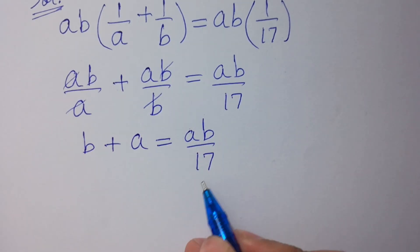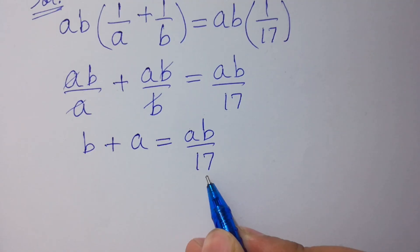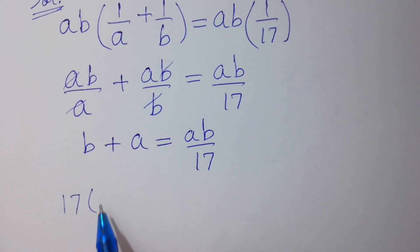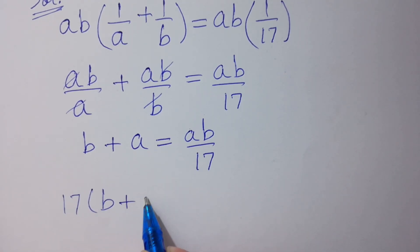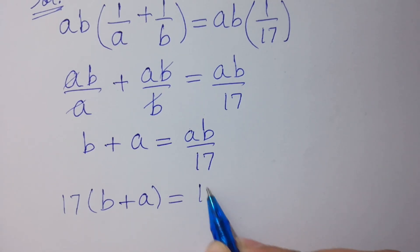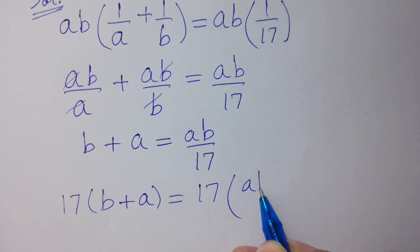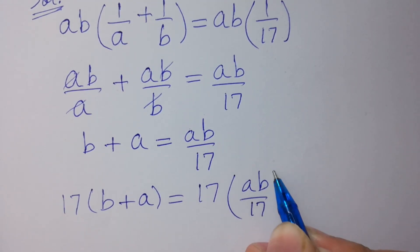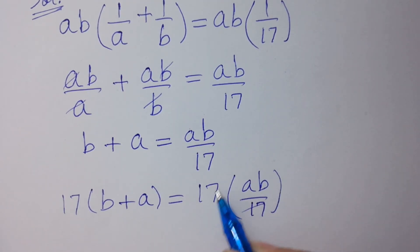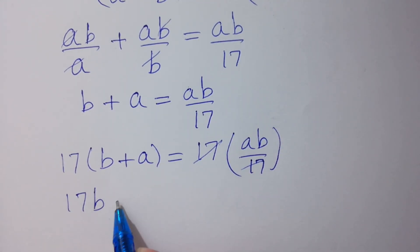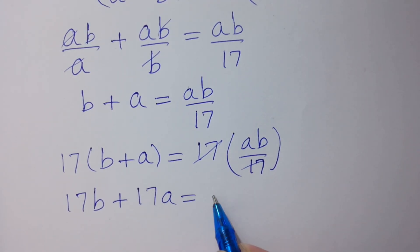To get rid of 17, we multiply both sides by 17. So 17 times b plus a equals 17 times ab over 17, and 17 and 17 cancel. This gives us 17b plus 17a equals ab.